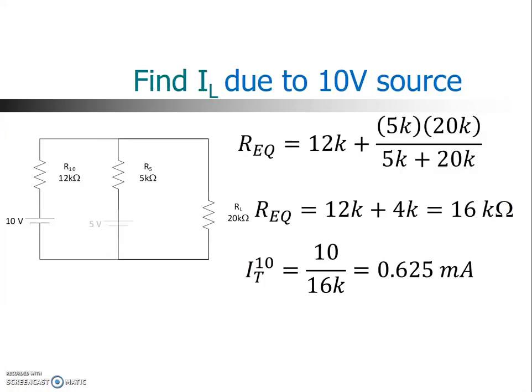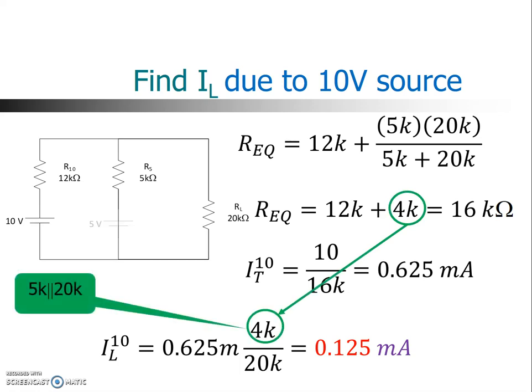So how do we apply that to our circuit? Well, here's where we left off. We left off with the total current of 0.625 milliamps. And that's going to get divided between the 5K and the 20K. So we have the total current, 0.625, multiplied by 4K, divided by 20K. Now remember, the 4K is simply the parallel combination of the 5K and the 20K. It's not the R_EQ of the whole circuit. It's only the equivalent of the parallel resistors. So that's where the 4K comes from, the equivalent resistance of just the parallel resistors. The 12K does not play a role there. And then, of course, you divide by the 20K, which is the resistor we're interested in, the load resistor. So when you do that calculation, you get 0.125 milliamps. That is the current through load due to the 10-volt source.